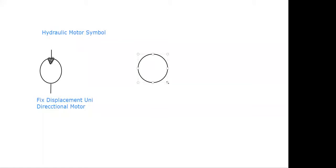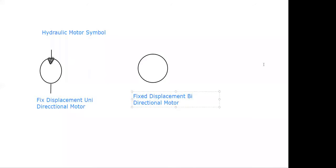Now we are going to see another symbol for hydraulic motor — fixed displacement bidirectional. The triangles are again inverted because this is a motor. It is bidirectional, so triangles are drawn on both sides. Since it handles hydraulic fluid, the triangles are shaded.